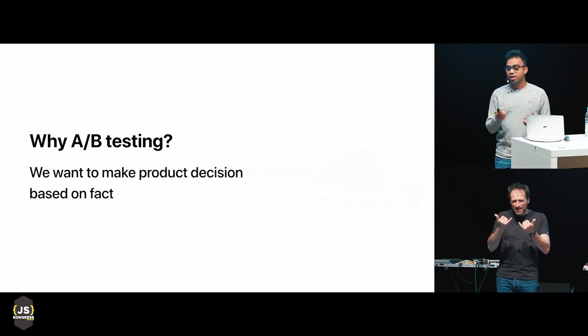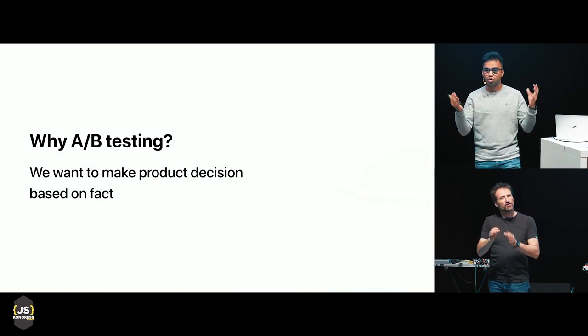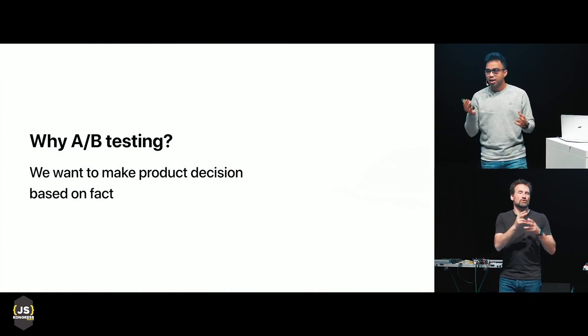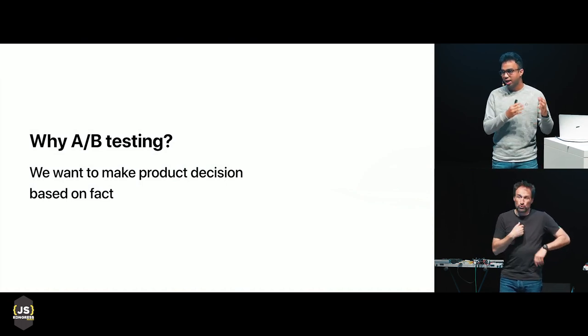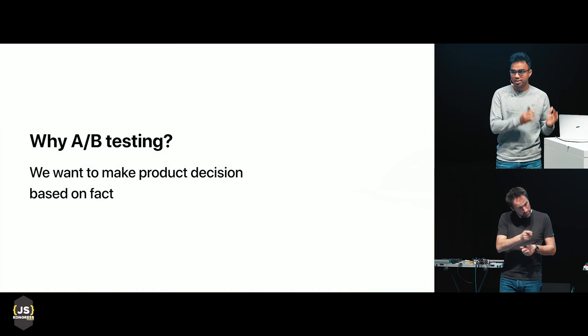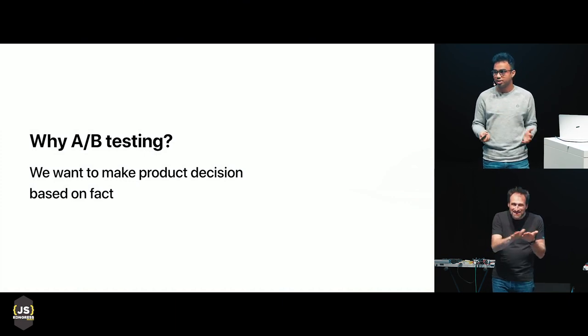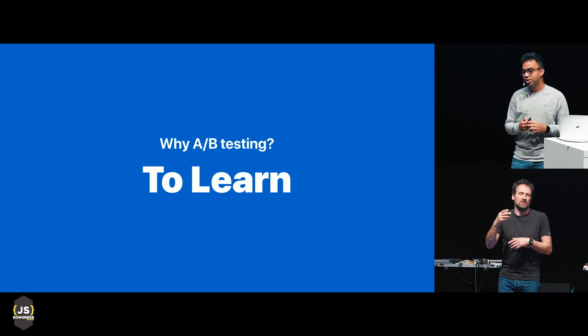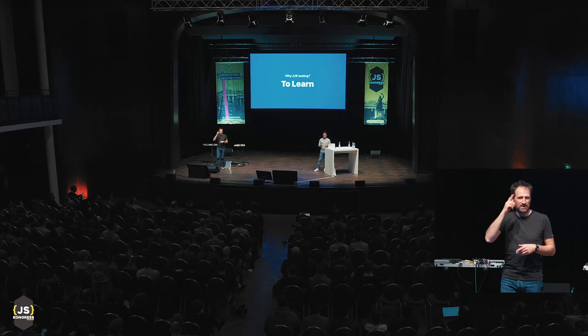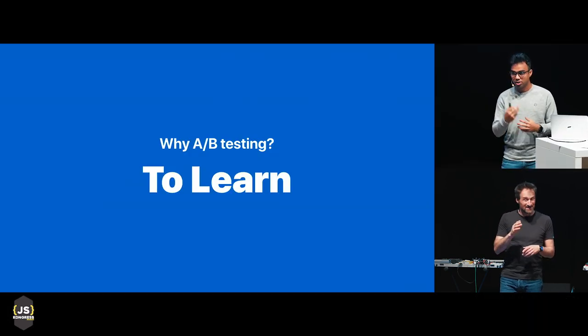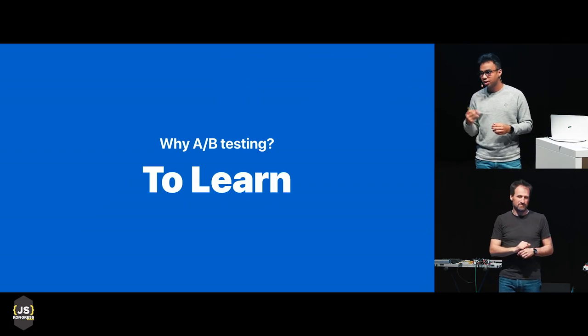Another thing is we want to make product decisions based on fact. It should not be a case where your manager or CEO comes and tells you to make the logo bigger. It's very important to ask why you want to do it, and then understand how you track whether it's happening. That's the process of deciding whether a product decision goes live based on fact. And most importantly — if it's one thing you're taking from my talk — A/B testing is mainly done to learn. Every cycle you learn about your customer, your product, and how they behave.